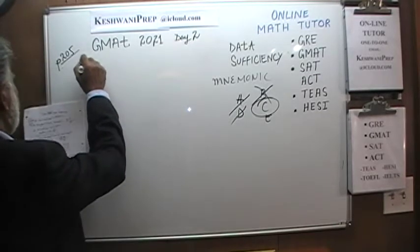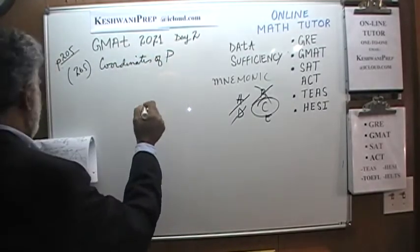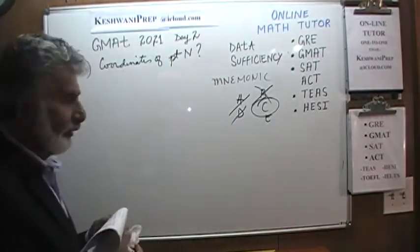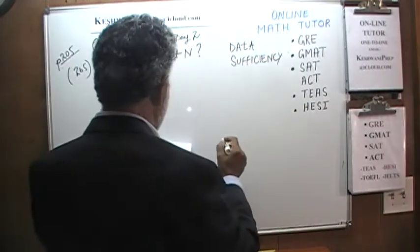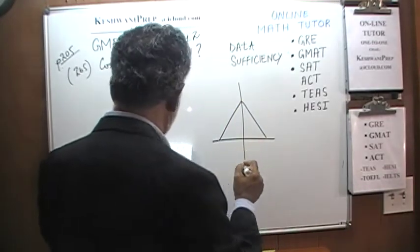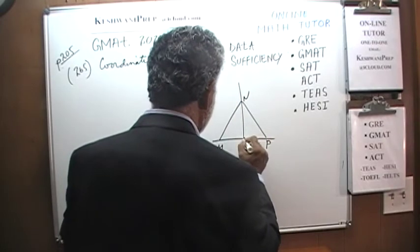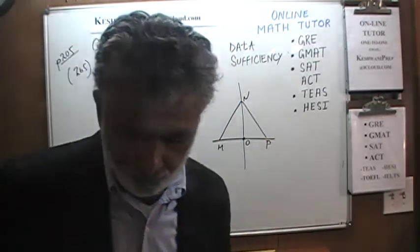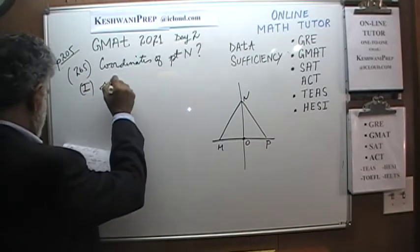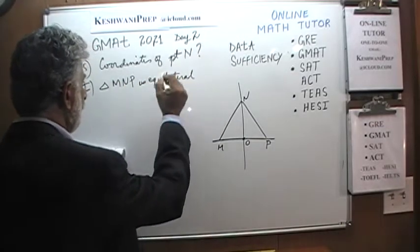Number 265. We are asked: what are the coordinates of point N? We are given a triangle M, N, P on a coordinate plane. The first statement tells us that triangle MNP is an equilateral triangle. Statement one by itself is not enough, but unlike problem 263 where both statements were utterly worthless, this is useful information. If we have something more in the second statement, we can probably figure out the coordinates of N.